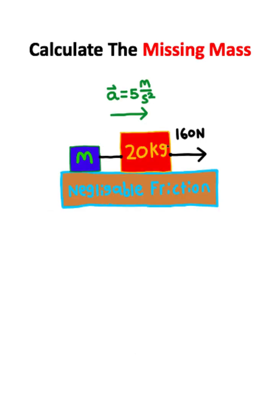So let's say that we have two connected blocks. These two blocks are being driven by a 160 Newton force. The blocks are also accelerating at 5 meters per second squared. We want to see if we can calculate the mass of this block in the back.